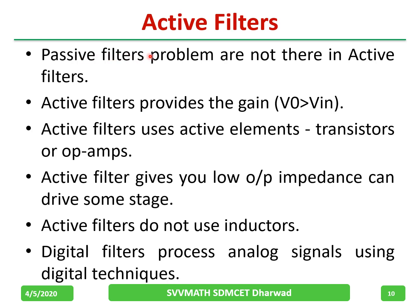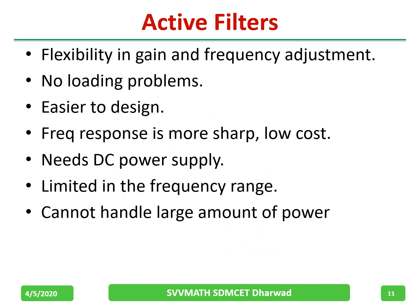The problems found in passive filters are not present in active filters. Active filters provide gain and use active elements like op-amps, transistors, and FETs. An active filter gives low output impedance, which can drive subsequent stages — we always prefer low output impedance and high input impedance. Active filters do not use inductors. They offer a lot of flexibility in gain and frequency adjustment, no loading problem due to high input resistance, and are easier to design.